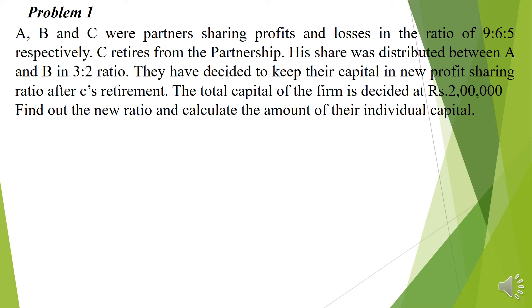Now let us work out the first problem. A, B, and C were partners sharing profits and losses in the ratio 9:6:5 — this is the old profit sharing ratio. C retires from partnership. His share is distributed between A and B in the ratio 3:2 — this is the gain ratio. They have decided to keep their capital in the new profit sharing ratio after C's retirement. The total capital of the firm is decided at 2 lakh.